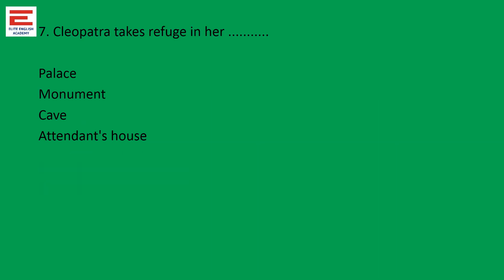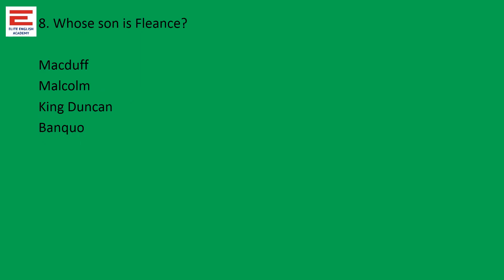Question seven: Cleopatra takes refuge in her monument — it is a very basic question because when her army falls, she and Antony take refuge in the monument. Question eight: Fleance is the son of Banquo. All children of Macduff are killed. Malcolm is the son of King Duncan — Donalbain and Malcolm are the sons of King Duncan. Macduff does not have surviving children because all the children are killed. Then Banquo has got sons, and Fleance is the son of Banquo.